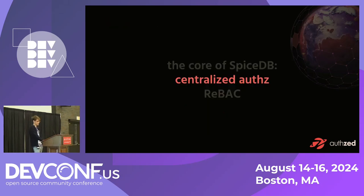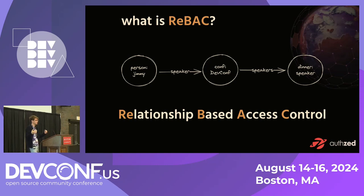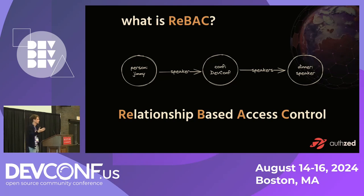Next up is ReBAC — relationship-based access control. This is not to be confused with RBAC, which is role-based access control. ReBAC is actually lower level than that, and you can use it to implement RBAC or any other patterns. The idea was inspired largely by Facebook. When Facebook introduced photo sharing, the dropdown options were: do you want your friends to see these photos? Friends of friends? All these are descriptions of people's relationships with you — permissions were keyed on relationships.